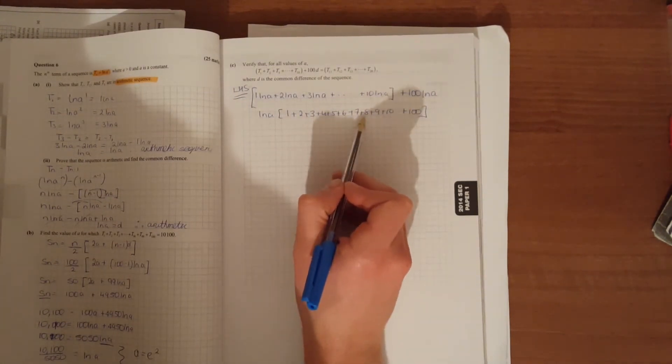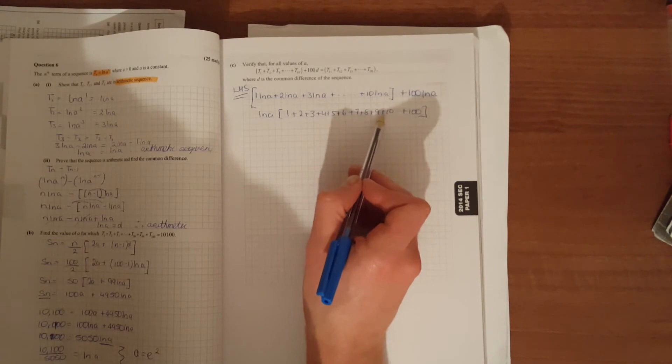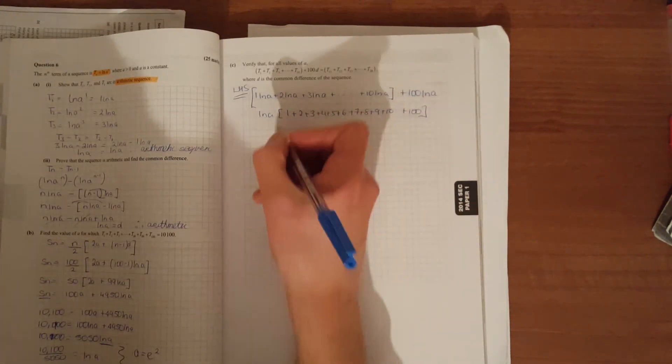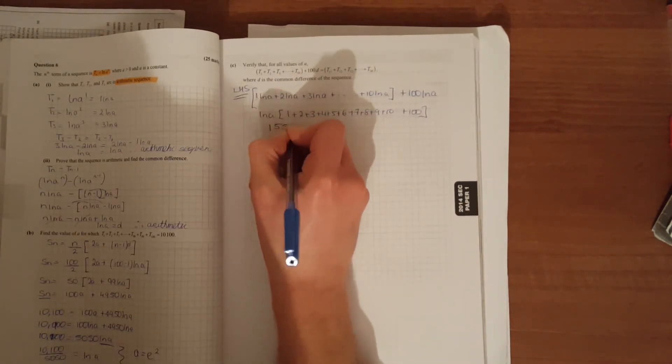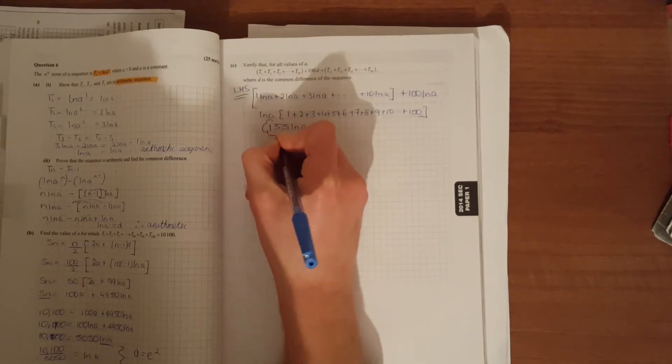36, 45, 55. 155·ln(a), so that's our left-hand side.